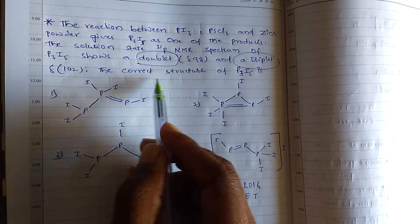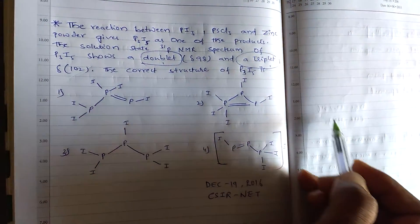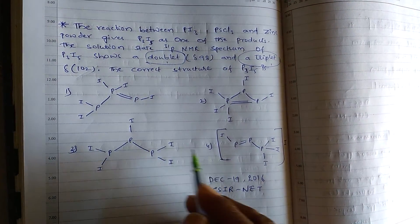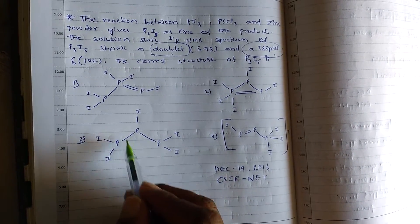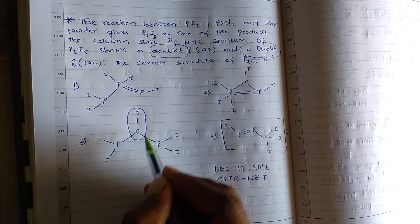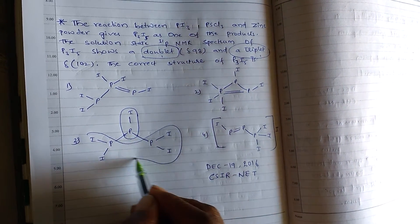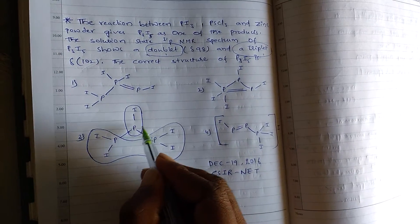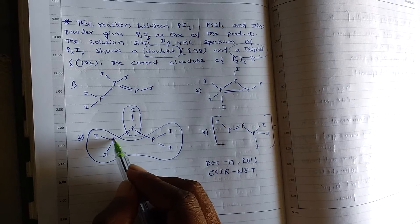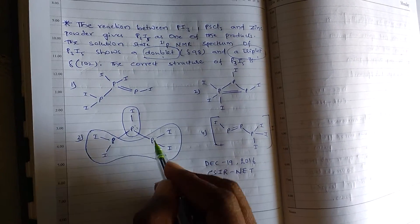P3I5 shows a doublet and a triplet. If you observe these options, the third option, this single phosphorus atom has similar environment of these two phosphorus atoms. That means this phosphorus atom has two similar phosphorus atoms. That's why it shows triplet.